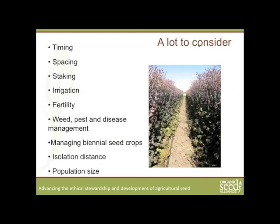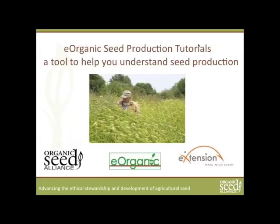But there's a lot to consider when producing seed, and there are a number of differences between a crop being grown as a vegetable versus as a seed crop. Those differences might include differences in timing of planting and harvest, differences in spacing, in whether you need to stake your crops, differences in how you irrigate, differences in fertility management, and differences in weed, pest, and disease management. In addition, there are some things you may not have had to think about at all if you're not growing a seed crop — for example, managing biennial seed crops over the winter for the following year, or managing isolation distance or population size.